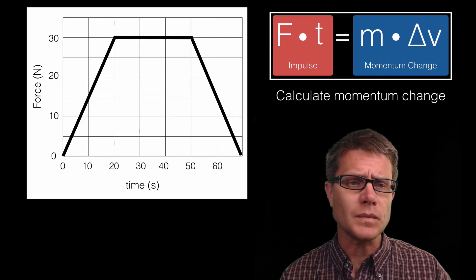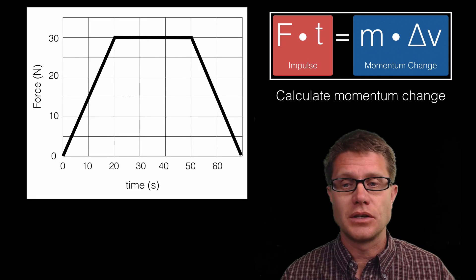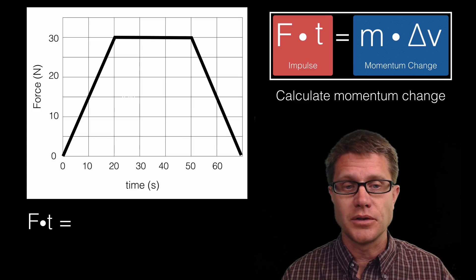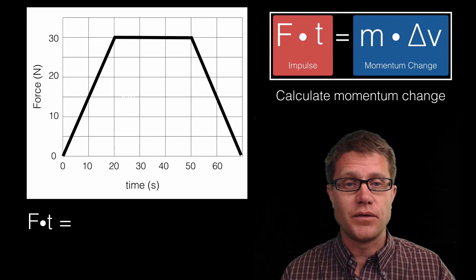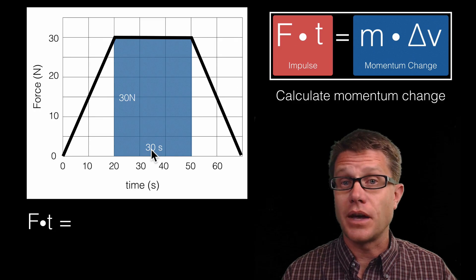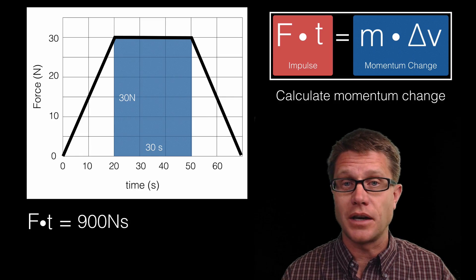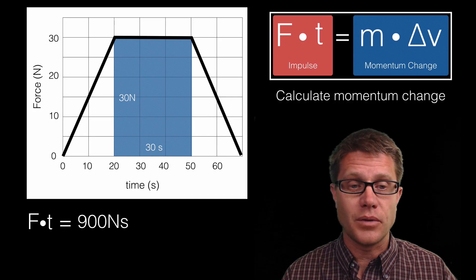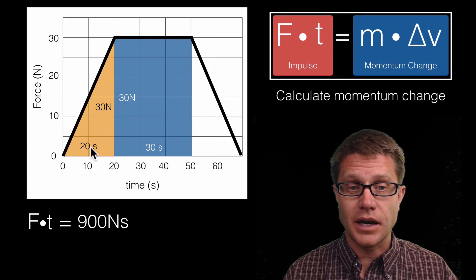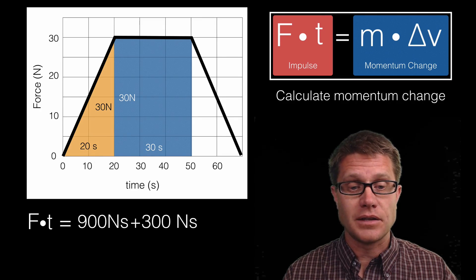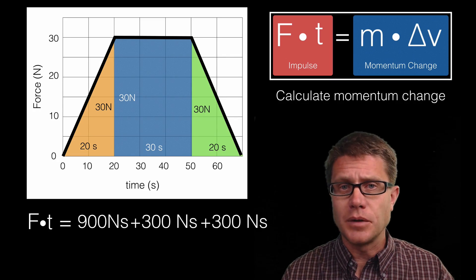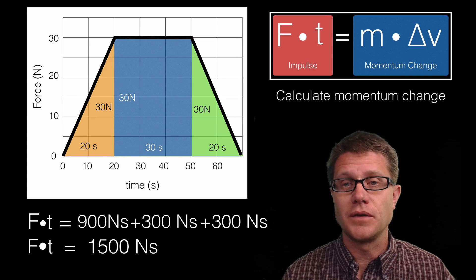Another way they could ask you a question is to give you a force-time graph and have you calculate the change in momentum. All you do is calculate the area underneath that curve — that gives you the impulse. We can break it down into geometric shapes. The first is a rectangle: 30 newtons × 30 seconds = 900 newton-seconds. There is also a triangle on the left and on the right: one-half × base × height = ½ × 30 newtons × 20 seconds = 300 newton-seconds each. Adding them all up gives a total impulse of 1,500 newton-seconds.